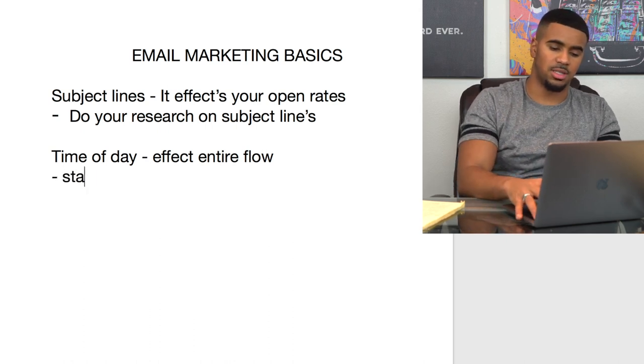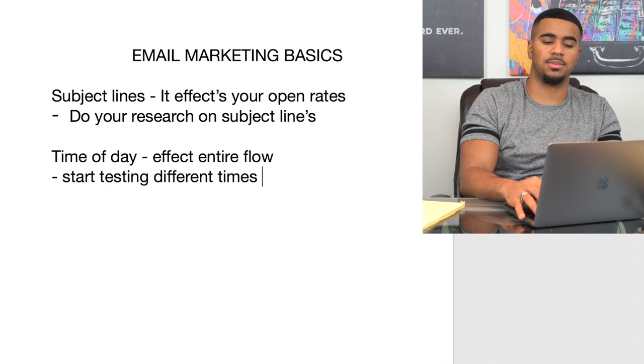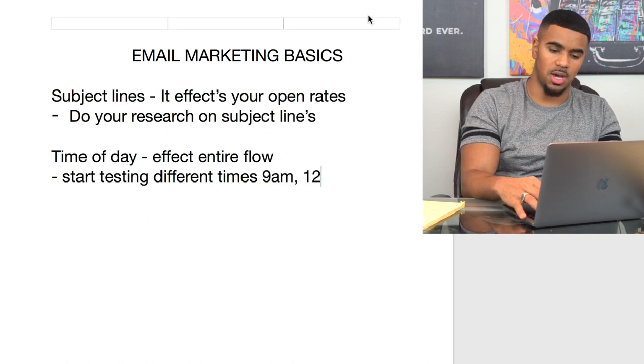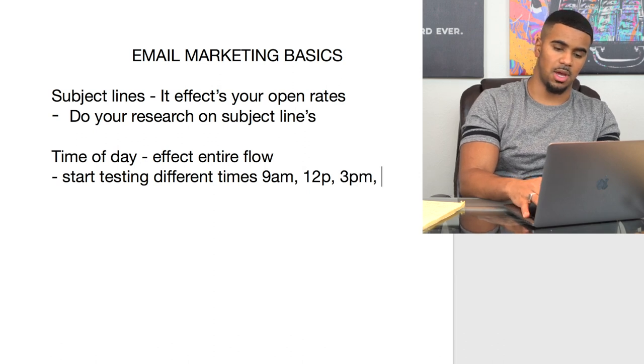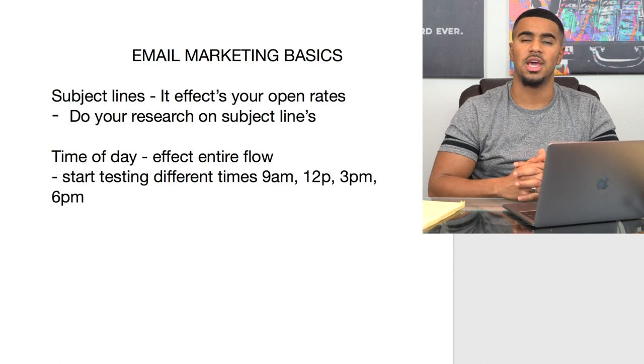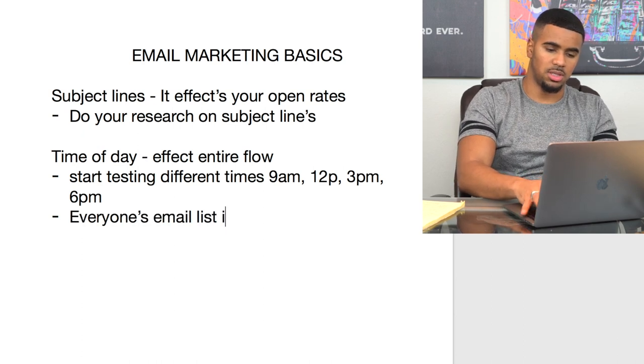To find the best time of day for your email list, test different times. The ones I learned to test are: 9 a.m., 12 p.m., 3 p.m., and 6 p.m. Spend at least a week sending at one time, then the next week switch to 12 p.m., third week 3 p.m., fourth week 6 p.m. Based on the metrics you get back from sending those emails, you'll be able to narrow down which time works best for your specific audience. Everyone's email list is different, which is why you have to test.